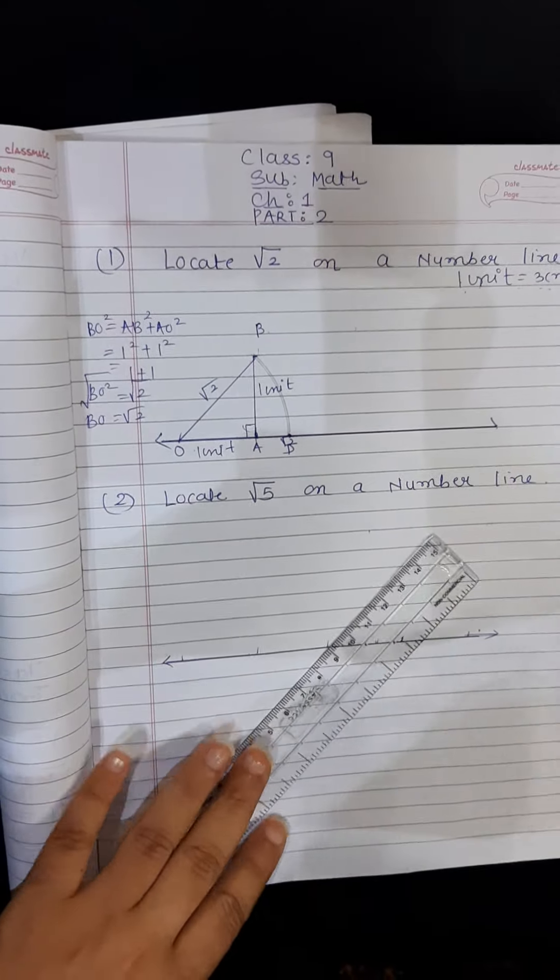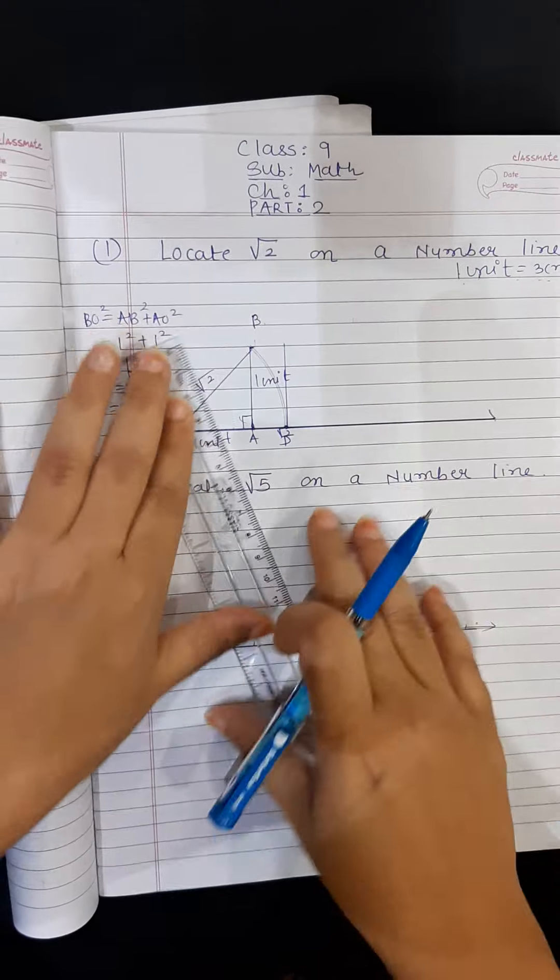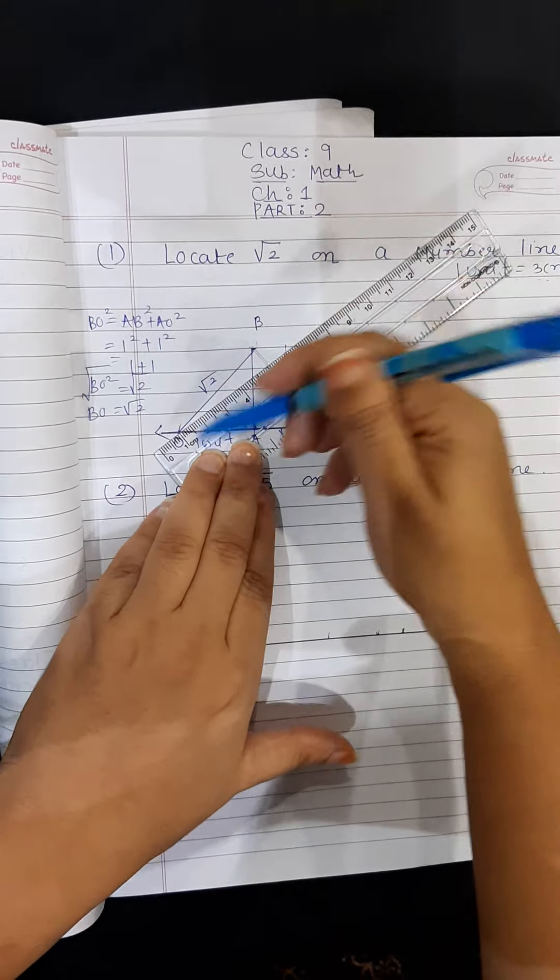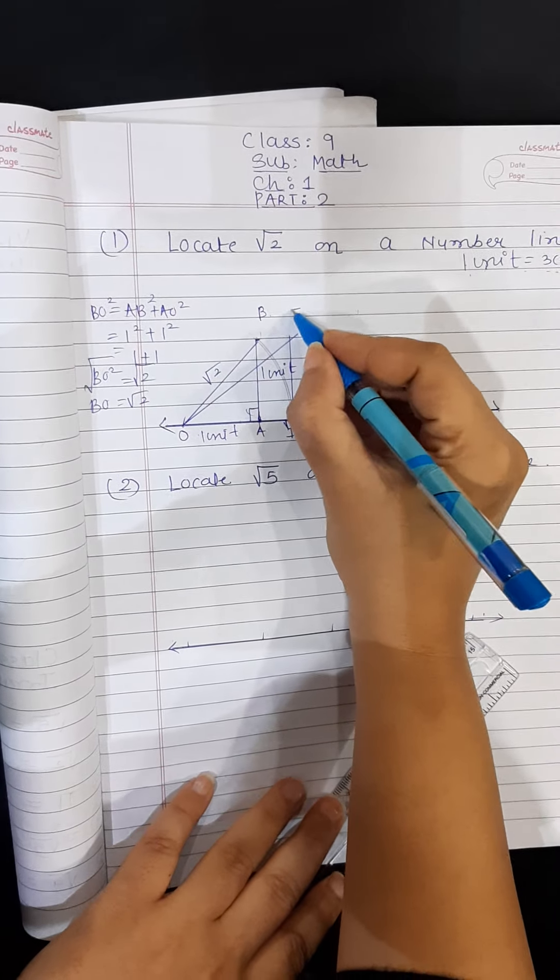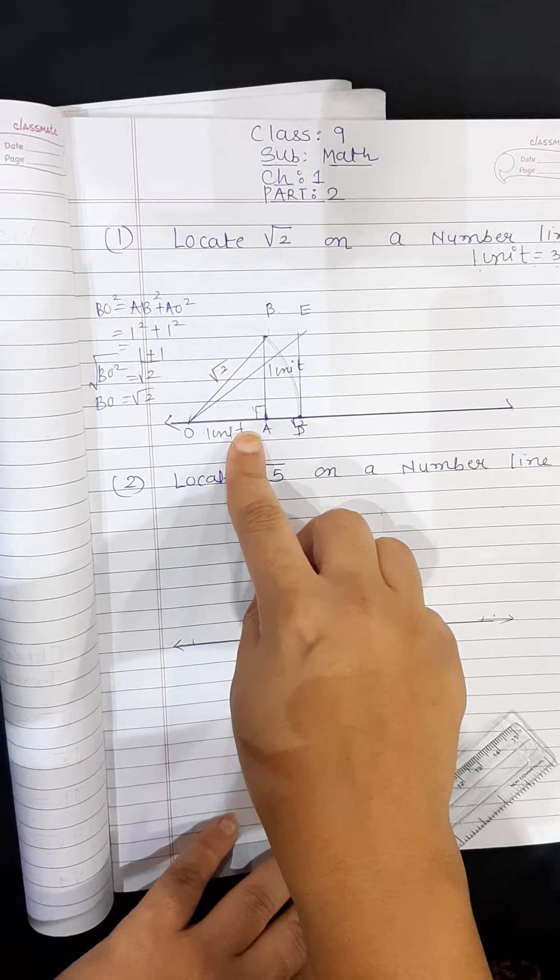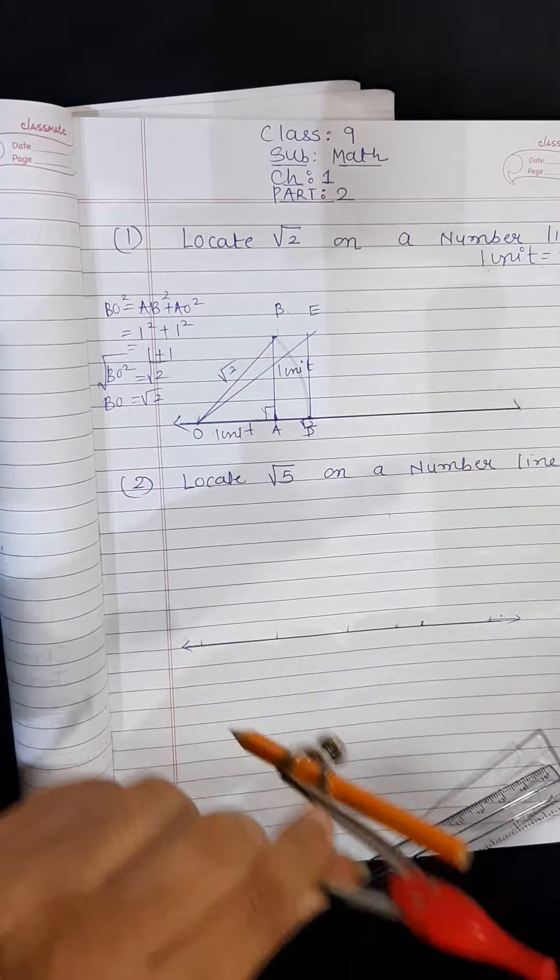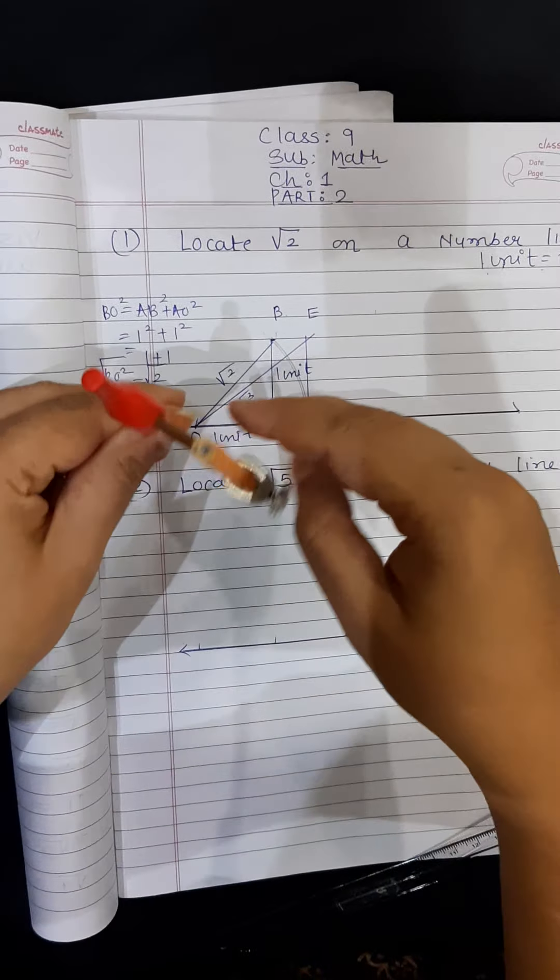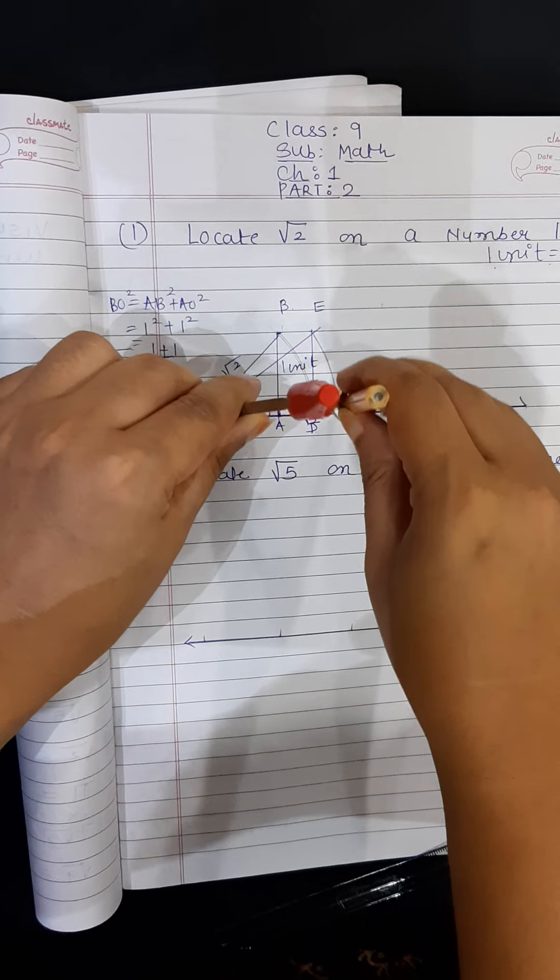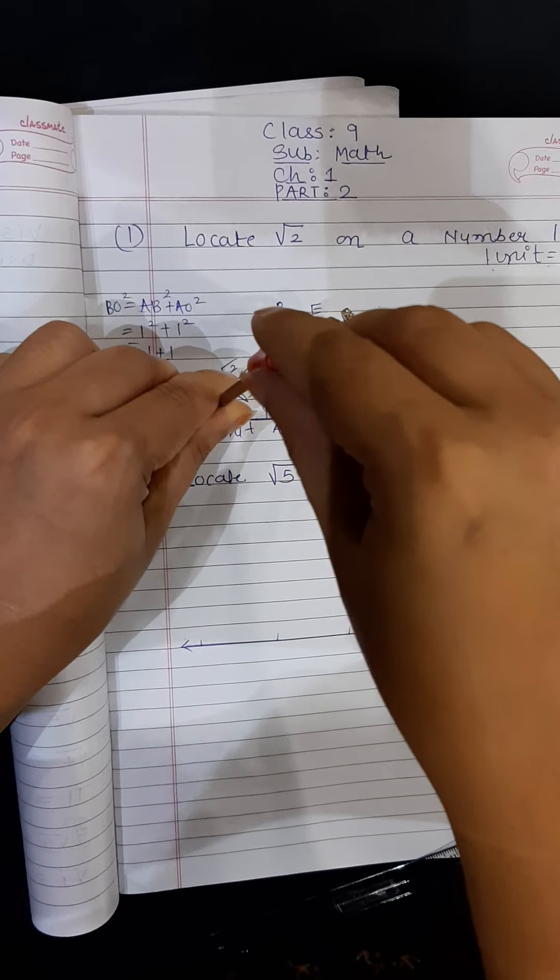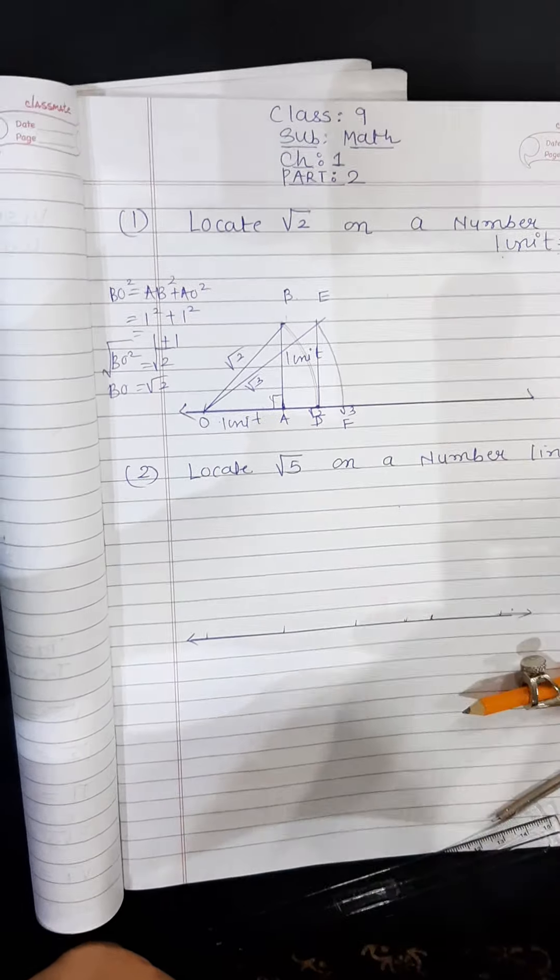Similarly you can go ahead with root 3. I will just do 1 unit here. And I will join this. Now this is D. Now I will put E here. So root 2 square is 2 plus 1 square is 1. So 2 plus 1 is 3. So this is root 3. So accordingly you just measure this and just draw an arc on the number line with this radius keeping O as a center. So this is here. This is root 3. I will mark as F.